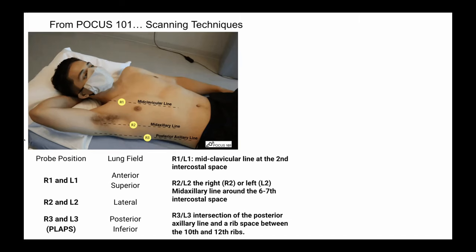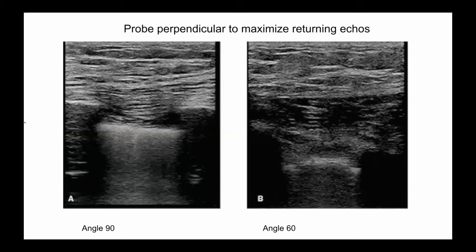When you place the probe on the chest, it should be perpendicular to the chest wall because all the images we gain are essentially artifacts. The artifacts are generated when the ultrasound beam hits a reflective surface and returns to the probe, so echoes will be maximized if your angle is 90 degrees. At a 90-degree angle you can see a very sharp border of the pleural line; at a 60-degree angle you see a more hazy line. At any point on the chest wall, your probe should be as perpendicular as possible to the chest wall so that you can get a clear image.